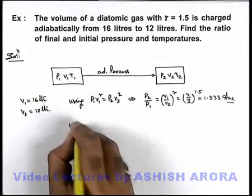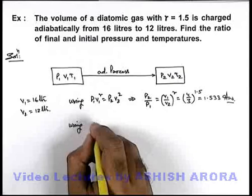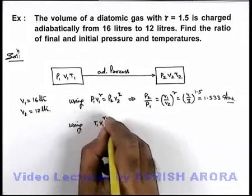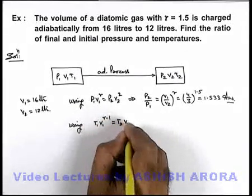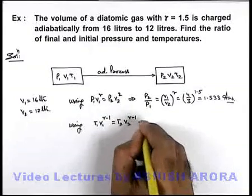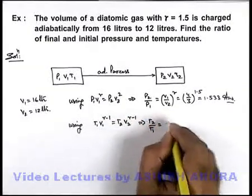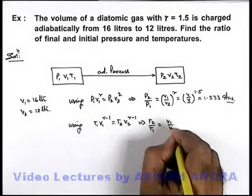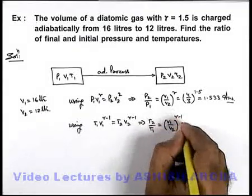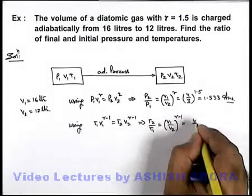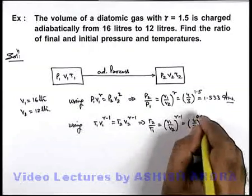Similarly we can use here t1 v1 gamma minus 1 is equal to t2 v2 gamma minus 1, which gives us t2 by t1 which is equal to v1 by v2 to power gamma minus 1. So here it is 4 by 3 to power 0.5.